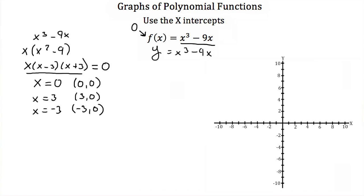And we can plot those points. (0, 0) is right here. (3, 0) is right here. And (-3, 0) is right there. Well, now we have three points, and we can almost graph this polynomial function. Let's find two more, and we should be able to complete our graph.